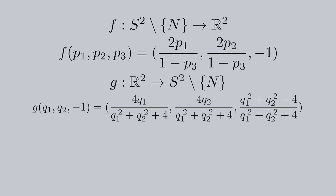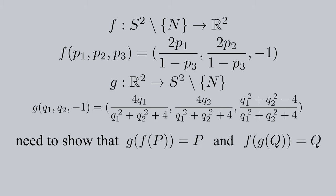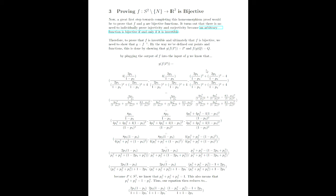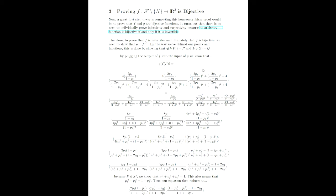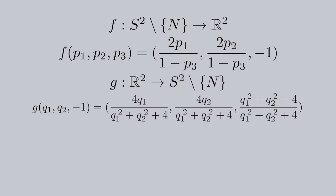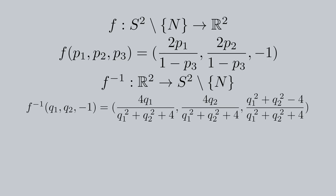Here are the stereographic projection functions between a centered-at-origin unit sphere and the xy-plane at height z equals negative one. To prove f is bijective, we can do this by proving f is invertible — meaning we need to show that g is f inverse. We use function compositions and show that g of f of p equals p, and f of g of q equals q. Proving bijectivity in this case consists of tedious algebra; check out section 3 of the linked paper on the stereographic projection homeomorphism proof for the step-by-step reduction. Now that we know g truly is f inverse, we'll refer to g as f inverse for the rest of this proof.